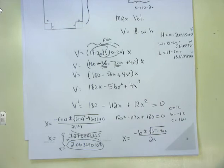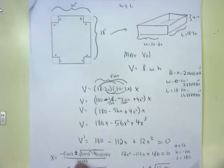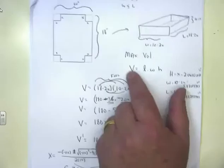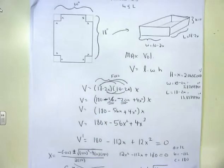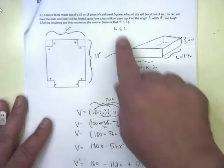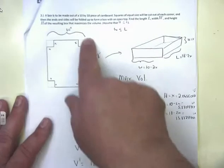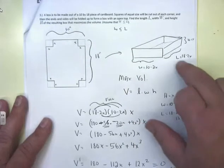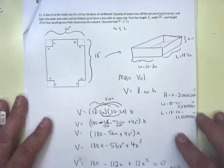Even though this problem didn't quite fit the standard format, you still had to do labeling and use constraints. The only constraint given was the 10 by 18 inch piece of paper. You had to fill in that volume equals length times width times height, then plug in your dimensions. Width was less than or equal to length, so the 10 minus 2X side was width and the 18 minus 2X side was length — which works because 18 minus 2X is bigger than 10 minus 2X.